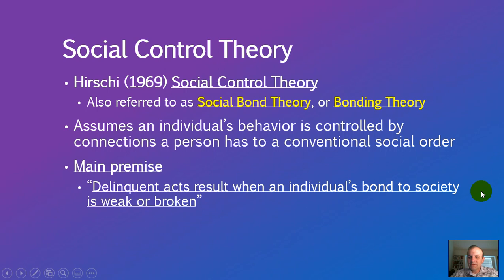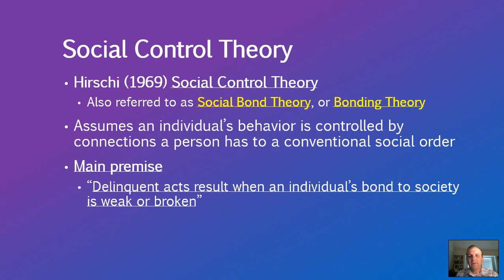Within criminology, one of the major theoretical perspectives in the initial control theories comes from Travis Hirschi's 1969 social control theory, also referred to as social bond theory or bonding theory. This theory has an assumption that an individual's behavior is controlled by connections a person has to a conventional social order — essentially that everybody has these connections to society to some degree.